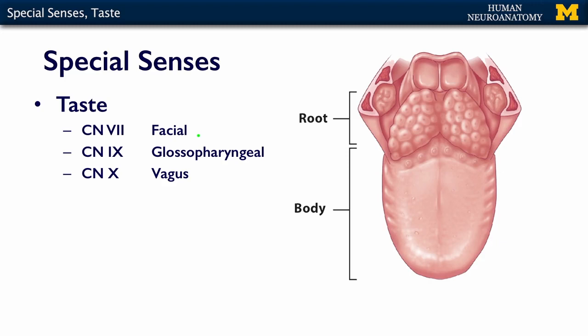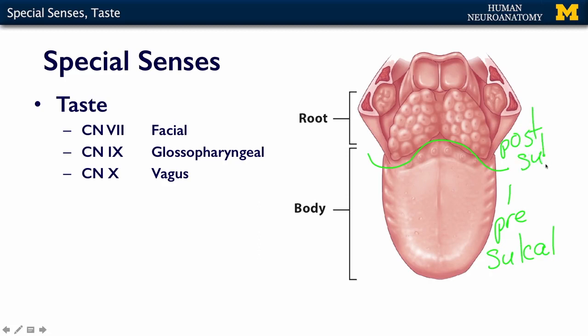In general, we divide the tongue into a couple of regions based on its development from the embryo. We talk about the body of the tongue and the root. The root and body are separated by a line called the sulcus. The part in front is the pre-sulcal part, and behind it is the post-sulcal part. Pre and post have different innervations with regard to taste and general sensation.